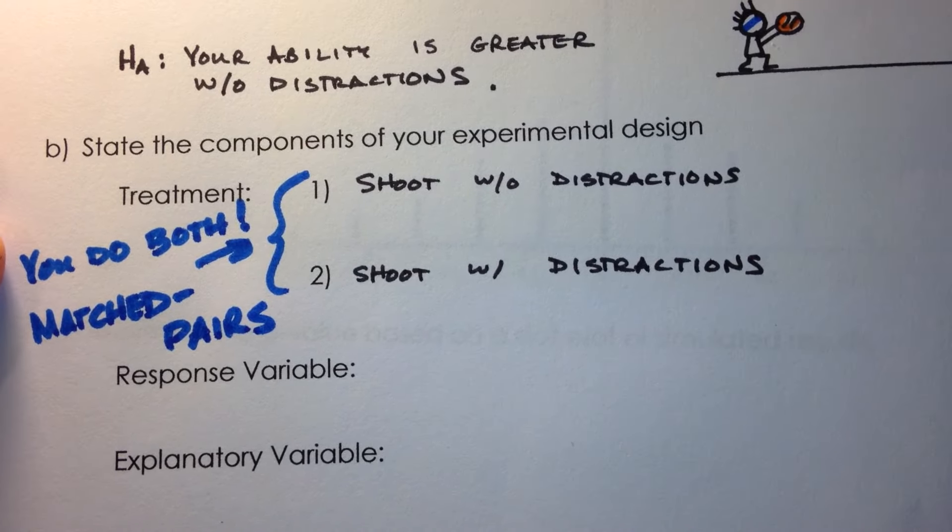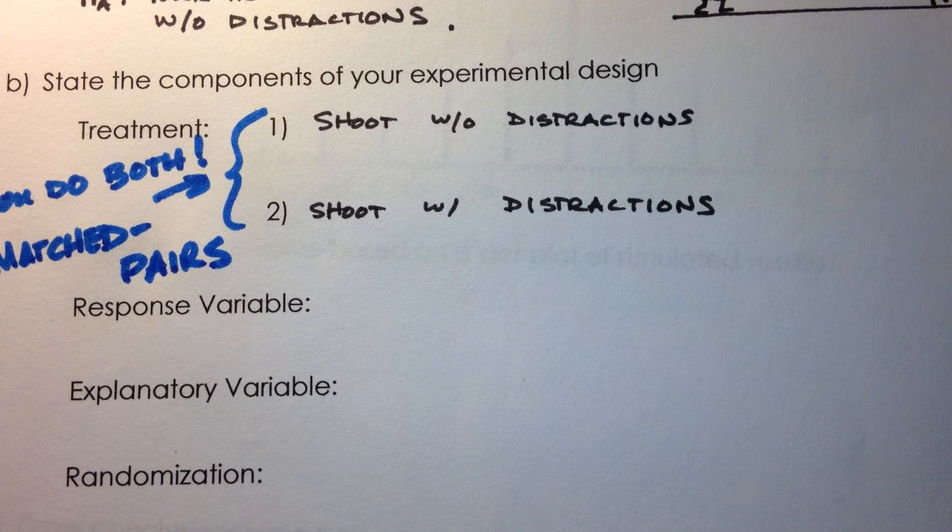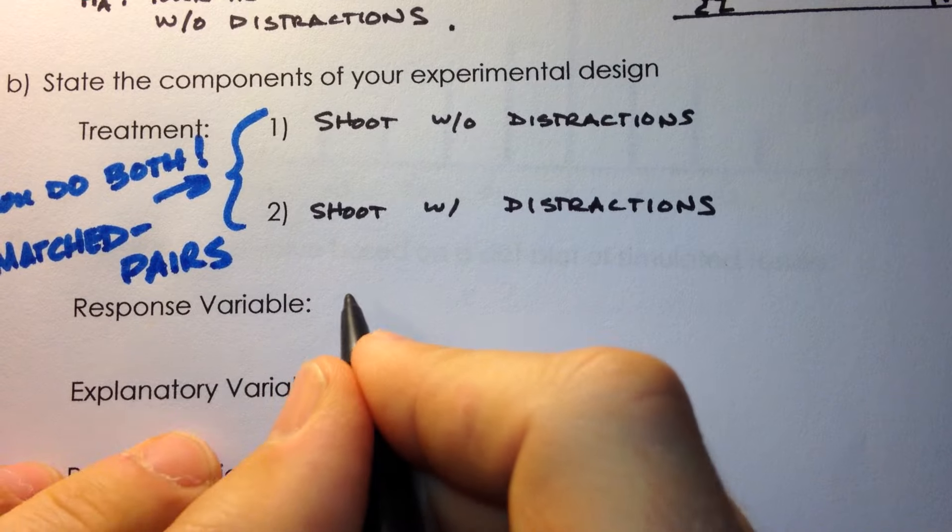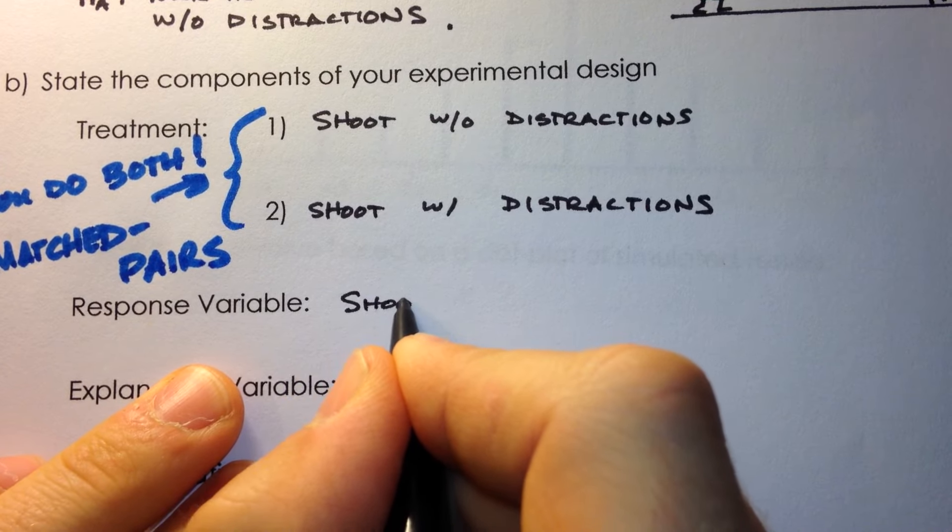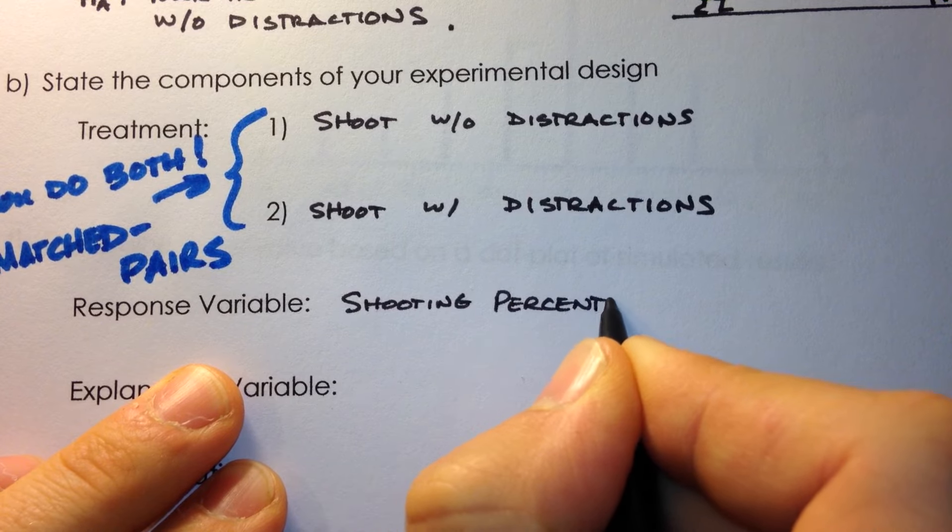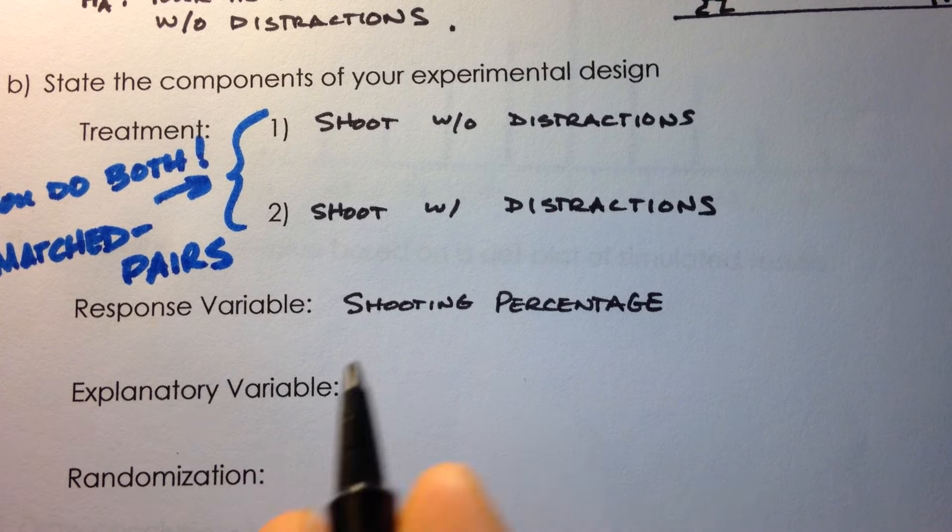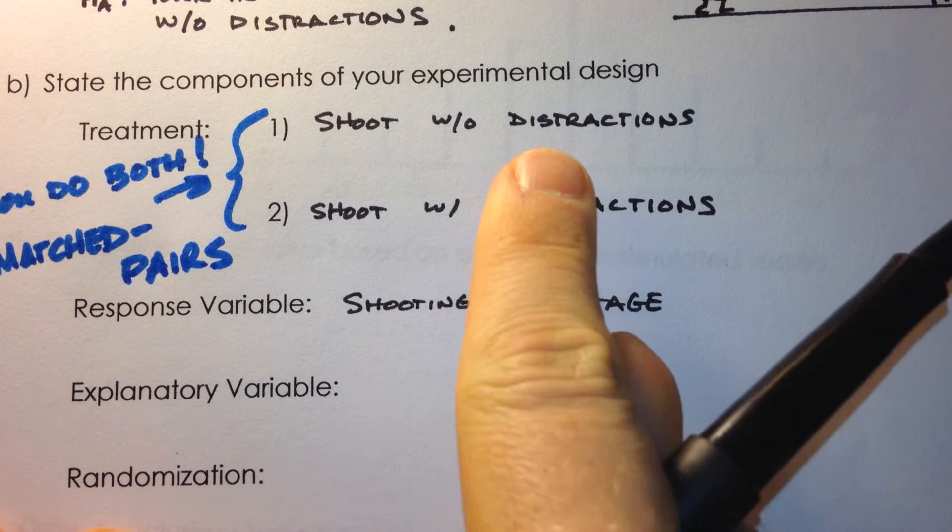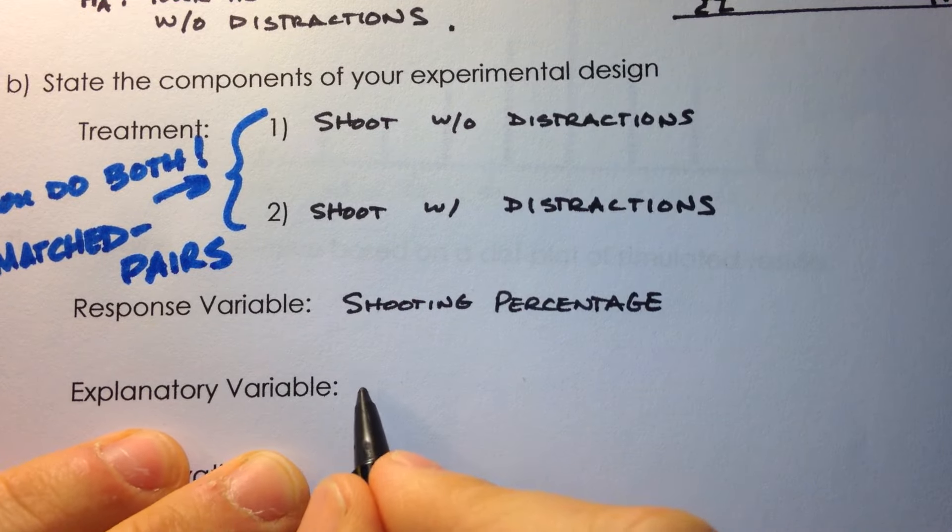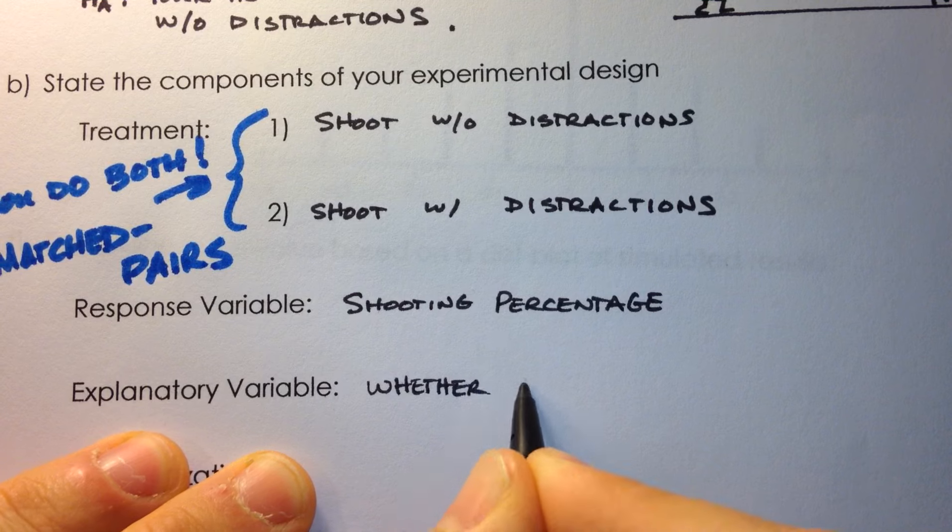And a lot of sports experiments are matched pairs. Now with that in mind, let's go through the parts of the experiment. Start with the response variable. What we're going to respond with is how good you are at shooting, so we'll say your shooting percentage. The explanatory variable is going to be what explains the shooting percentage, and in this case it's whether distractions are present.